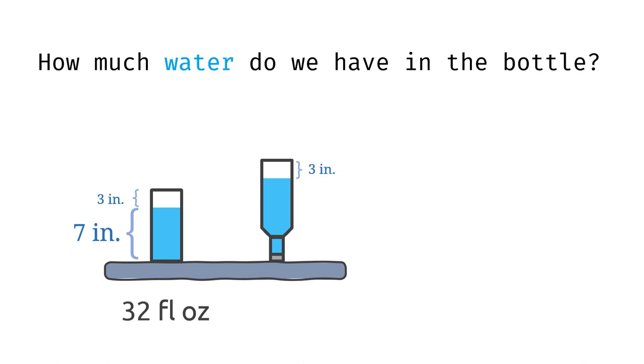So, we have a circular cylinder whose height is 10 inches. Since the height of the water is 7 inches, we can see that the bottle is 70% full.